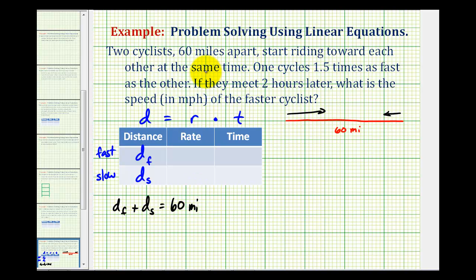Next, we know that the faster cyclist is traveling 1.5 times as fast as the slower cyclist. So we'll let the rate of the fast cyclist be 1.5 times r, therefore the slower cyclist will be traveling at a rate of r. Whatever r is, the faster cyclist is traveling 1.5 times as fast.